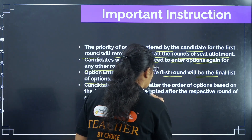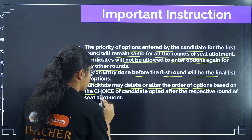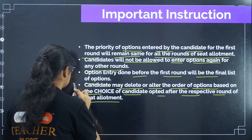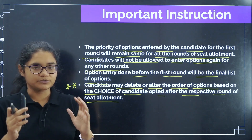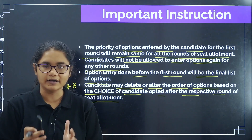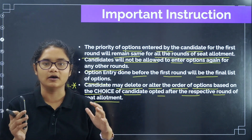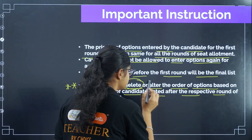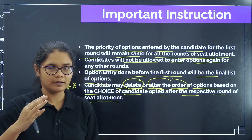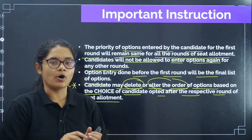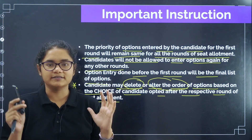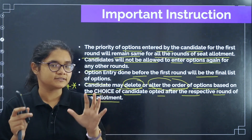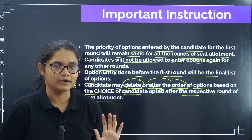Candidates may delete or alter the order of options based on their choice after the respective round of seat allotment. Whatever option entry you have done — after the Round 1 results come, for Round 2, if you have chosen to upgrade — you can only delete options or alter the order of options. But you cannot add any new option to the option entry list. Whatever colleges and courses you want to join, you must add all of them during the Round 1 option entry period.